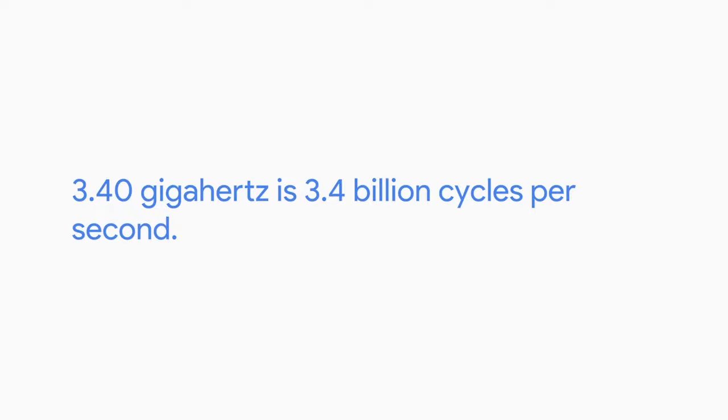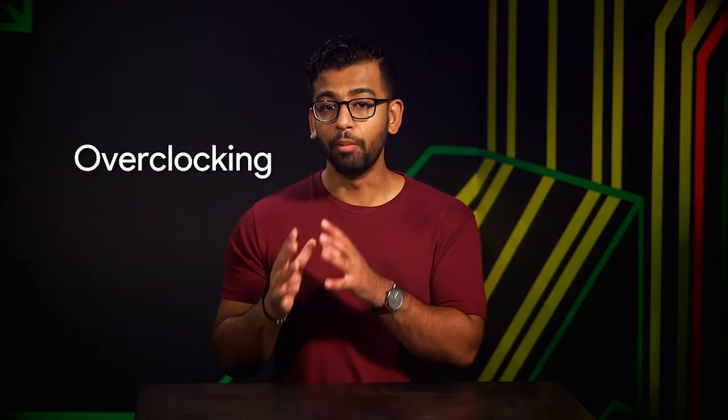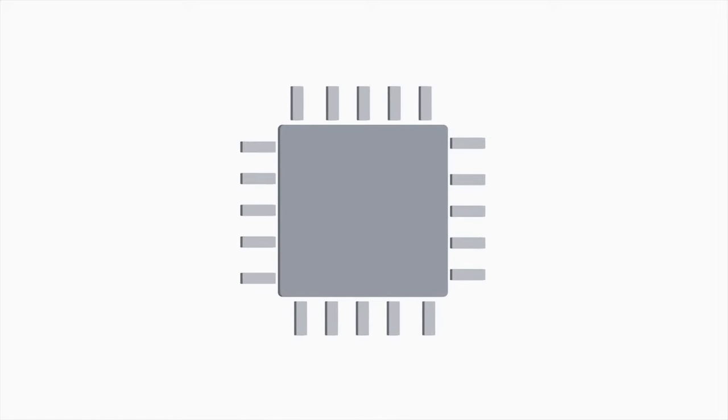Have you ever seen a CPU labeled 3.4GHz? This number refers to the clock speed of the CPU, which is the maximum number of clock cycles it can handle in a certain time period. 3.4GHz is 3.4 billion cycles per second. Just because it can run at this speed doesn't mean it does — it just means it can't exceed this number. There's a way you can exceed the number of clock cycles on your CPU called overclocking. It increases the rate of your CPU clock cycles to perform more tasks. This is commonly used to increase the performance in low-end CPUs, but there are cons like potentially overheating your CPU.